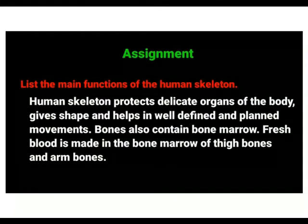List the main functions of the human skeleton. The human skeleton protects delicate organs of the body, keeps shape, and helps in well-defined and planned movements. Bones also contain bone marrow. Fresh blood is made in the bone marrow of thigh bones and arm bones.